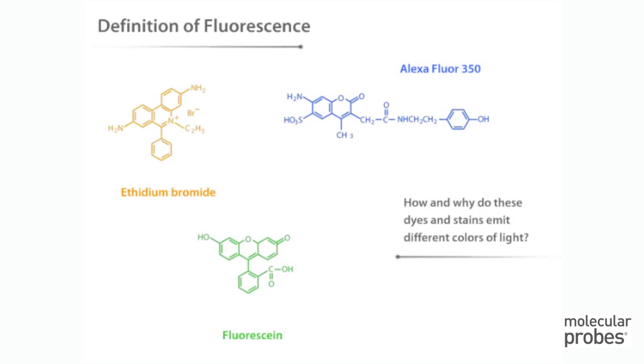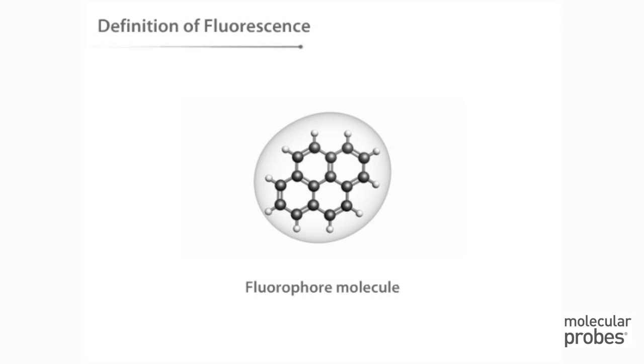How and why do these dyes and stains emit different colors of light? Some molecules are capable of being excited via absorption of light energy to a higher energy state, also called an excited state.